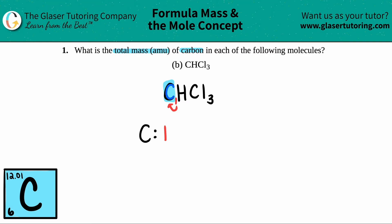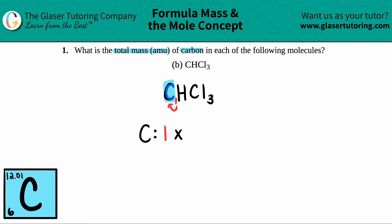That's the hardest part — just making sure that you have the right number of carbons. Now all we have to do is take that number and multiply it by the mass, the molecular mass in AMU on the periodic table. There are two numbers in every box for every element. There's a smaller number — for carbon it's six — and then there's a larger number. On my periodic table it's 12.01, but on your periodic table it might be a little different. That's okay — periodic tables may vary a little bit.